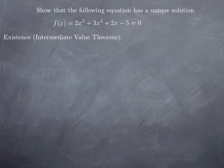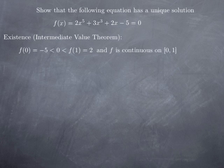First we want to show that there is a solution to this equation, and this is the kind of question we've looked at before when we discuss the intermediate value theorem. We observe that the function takes both negative and positive values. For instance, if I plug x = 0 in this function, I obtain −5, which is negative. And if I plug x = 1, I get 2, which is positive. The function f is a polynomial and therefore it is continuous on the real line, in particular it is continuous on the closed interval [0, 1].